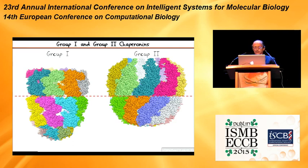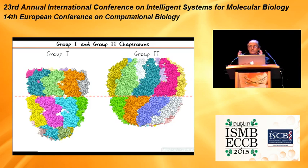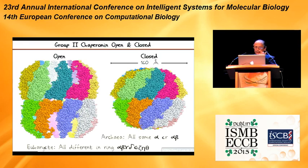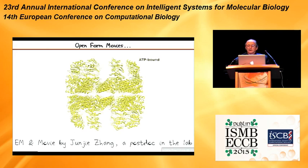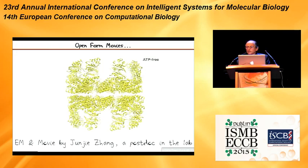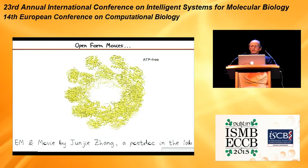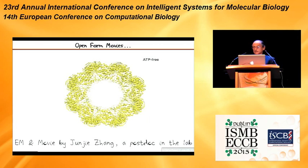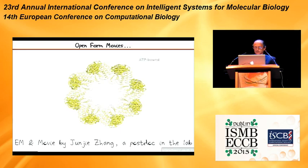In group one chaperonins, this shows the bottom part closed and the top part open, but they're actually symmetrical. Opening and closing of this cavity is done by a cap. In the group two chaperonins, the leaves actually close in and close out. This seems to be a cavity that through the use of ATP can open and close. This just shows the group two chaperonin — the eukaryote and archaea chaperonin — in its open and closed state. Here's a movie made by an ex-postdoc Junji Chang, who did the EM of the archaea form, and you can see this thing in open and closed state.